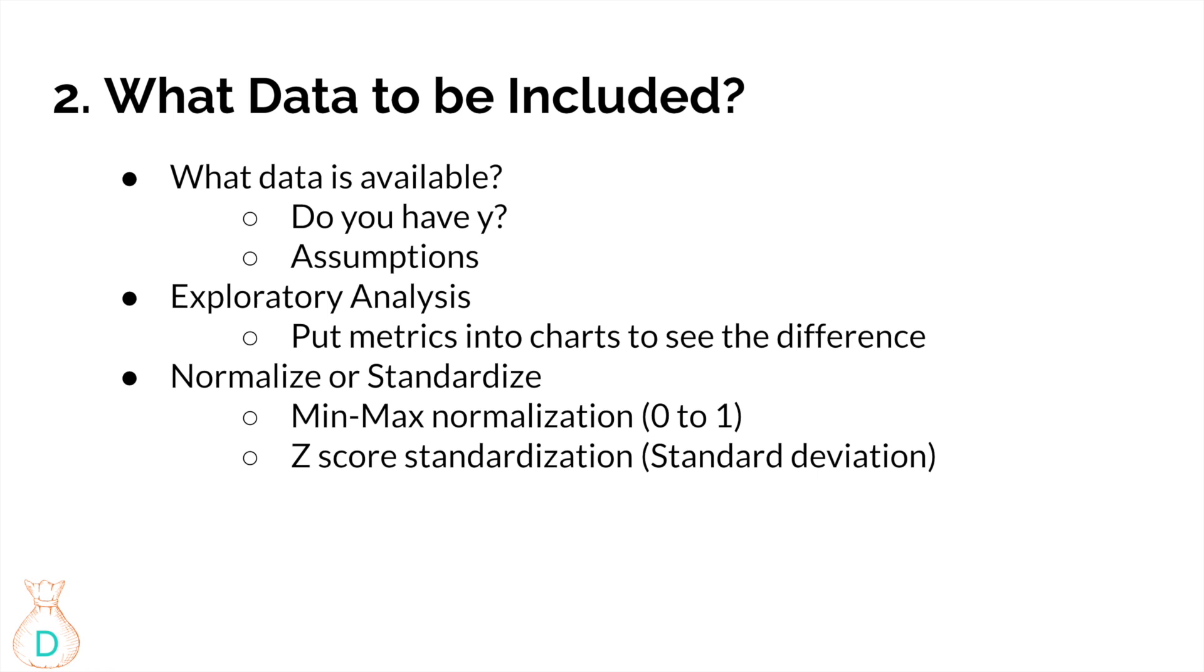After that, you might want to normalize or standardize your data. That really depends on what machine learning model you're using because some of the machine learning models like k means take the scale of the data or metrics very seriously. So you definitely want to do some sort of normalization. The two most commonly used ones I personally use are min max normalization. So it pretty much takes a metric that can go from zero to a couple hundred thousand and then you try to shrink them down from zero to one, reducing the scale to only zero to one. Or you can also do z score standardization, which is pretty much putting everyone into a bell shaped curve and calculating how many standard deviations they are away from the mean.